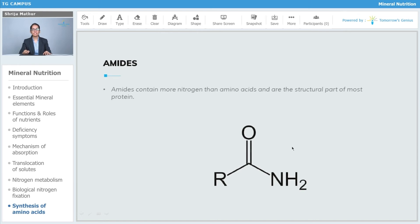Talking about amides, amides contain more nitrogen than amino acids and are the structural part of most proteins. Amides are double aminated keto acids such as asparagine and glutamine.